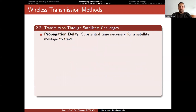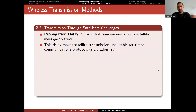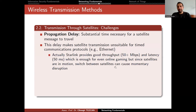There are some transmission challenges through satellites. The first is propagation delay — the substantial time necessary for a satellite message to travel depends on the distance of the satellite and the band it is using. This delay makes satellite transmission unsuitable for time-sensitive communication protocols, such as Ethernet. However, nowadays Starlink is a good solution — it provides good throughput of more than 50 megabits per second. In Ukraine during the invasion, users reported around 200 megabits per second with very low latency of about 50 milliseconds, which is enough for online gaming.